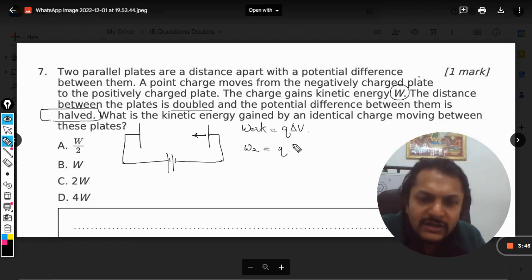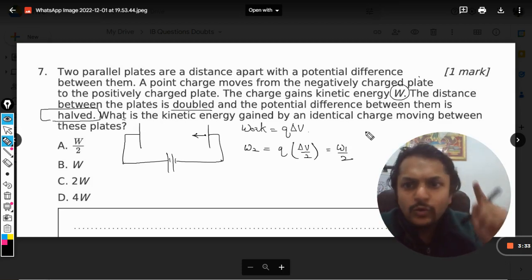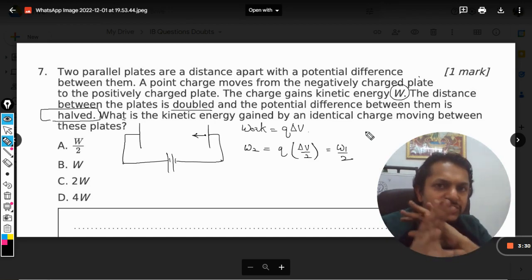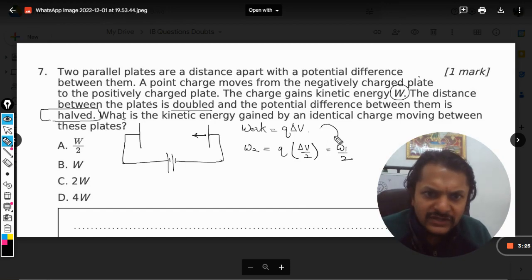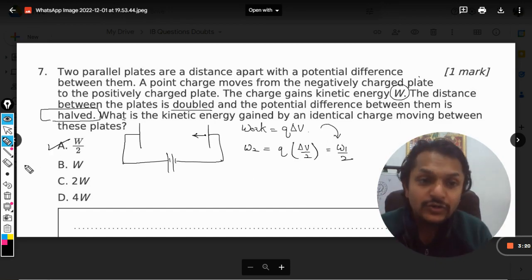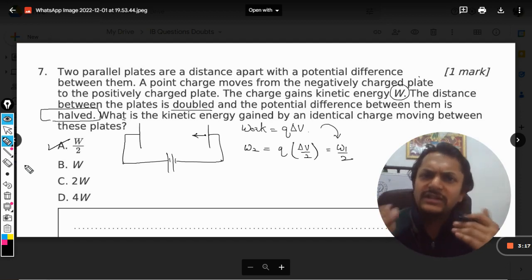The charge is q only, but the potential difference is now halved, so it can be taken as W1/2. What is the kinetic energy gained by the identical charge moving between these plates? The charge is not changed; it is kept q only, and the potential difference is ΔV/2. We have just substituted this value, so our answer will be W/2. It's a simple explanation. The question was a little long, otherwise it was a simple question.